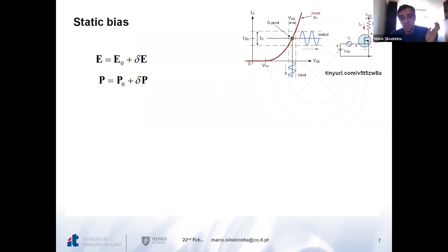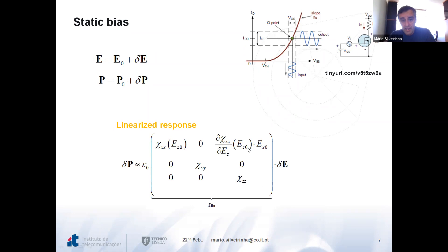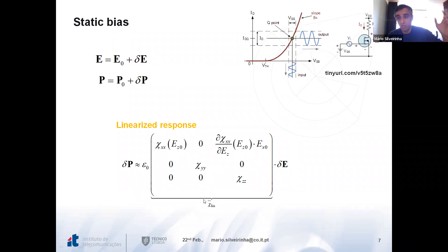Taking the constitutive relation and applying a Taylor expansion to linearize the response, we get a very simple procedure. The result shows the response of the signal part of the polarization vector to the signal part of the electric field — it depends on the bias components EX0 and EZ0. One very important feature: even though the original tensor was symmetric, after linearizing for this type of coupling, you get something that is not symmetric. This is the origin of the non-Hermitian response and of the non-reciprocity.